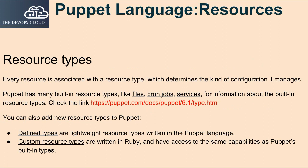Every resource is associated with a resource type, which determines the kind of configuration it manages. Puppet has many built-in resource types, like files, cron jobs, and services. You can also add new resource types to Puppet. Defined types are lightweight resource types written in the Puppet language. Custom resource types are written in Ruby, and have access to the same capabilities as Puppet's built-in types.